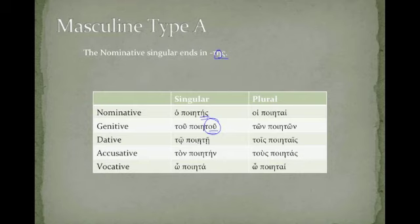But once we get past the genitive singular, dative tō poiētē, ton poiētēn, the endings are identical to our type A feminines. Notice the vocative has an alpha there, poiēta. That's slightly different.